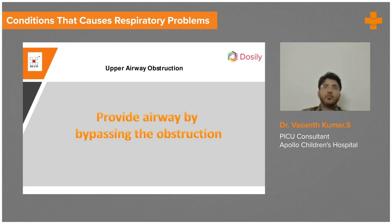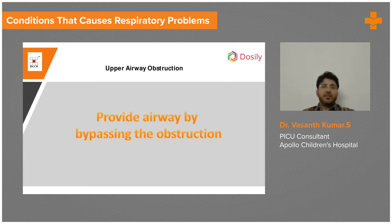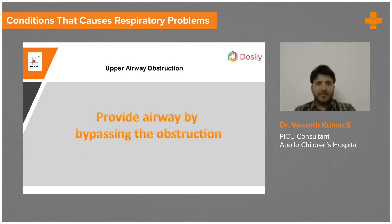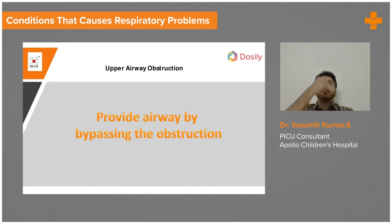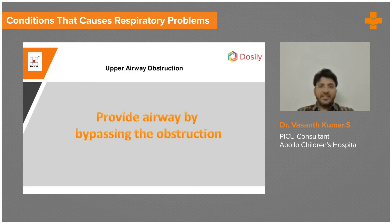Next is upper airway obstruction. Suppose you have a patient with upper airway obstruction, how do you intubate and ventilate them? This upper airway obstruction is a very, very dangerous scenario, usually quite common in children and even in adults. Your main job is to bypass the upper airway and your tube should reach a subglottic region so that you can ventilate them.